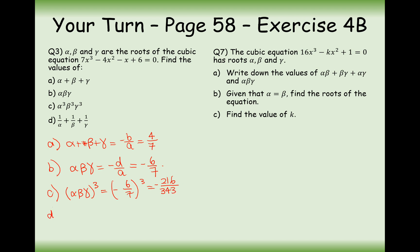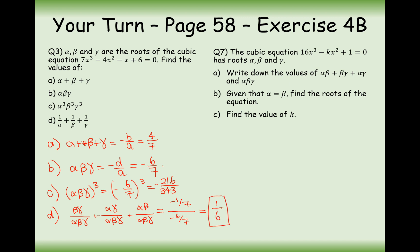Part (d) is the sum of reciprocals. Creating a common denominator of αβγ on all three fractions, the numerator becomes αβ + βγ + αγ (sum of doubles) and the denominator is αβγ (the triple). The sum of the doubles is c/a = −1/7 and the triple is −6/7. So the answer is (−1/7) ÷ (−6/7) = 1/6.